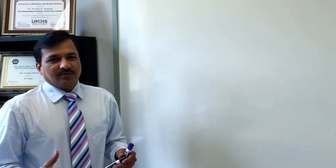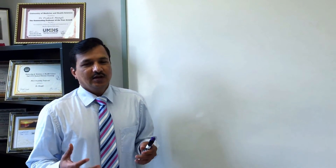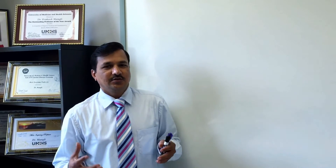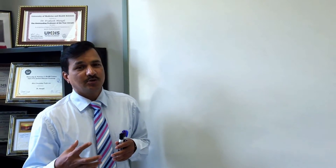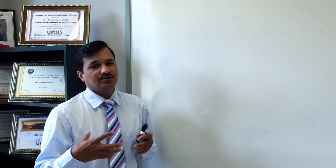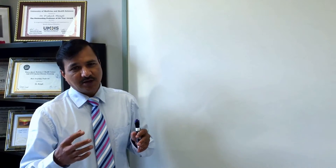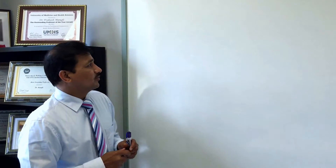Today I am going to explain the glucose-alanine cycle. We will focus on how amino nitrogen is transported to the liver, and what happens to the carbon skeleton in the liver and in the peripheral tissue.